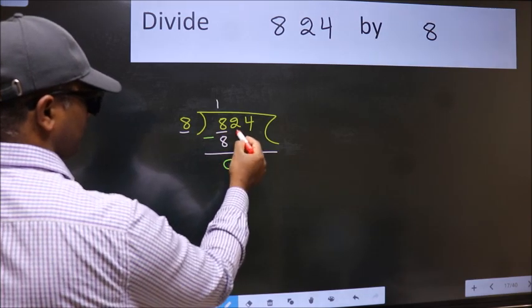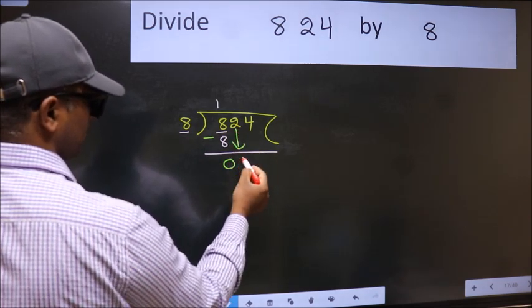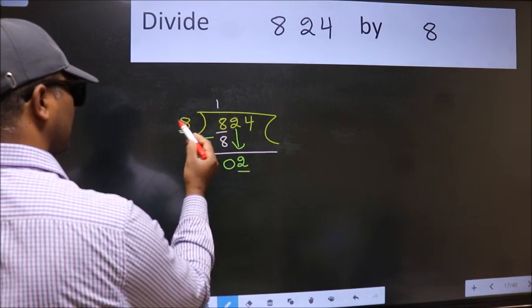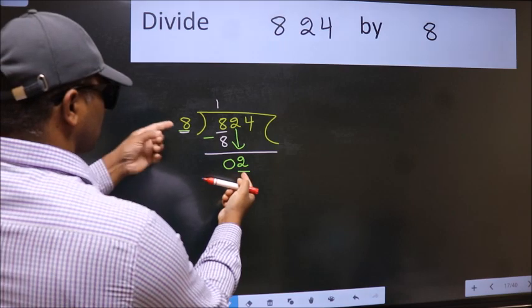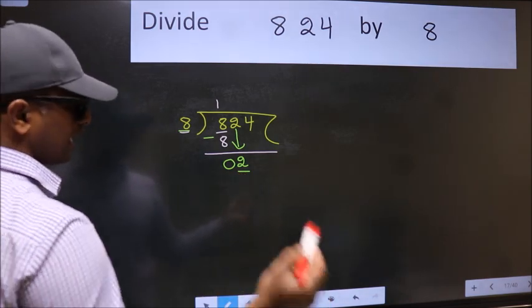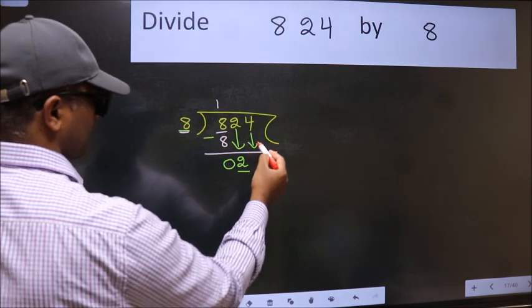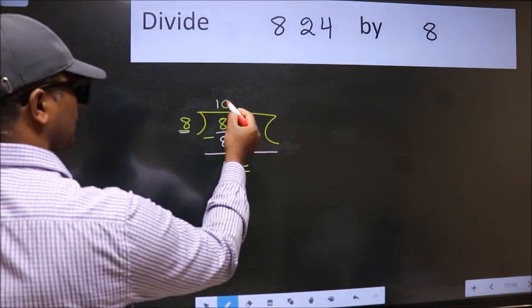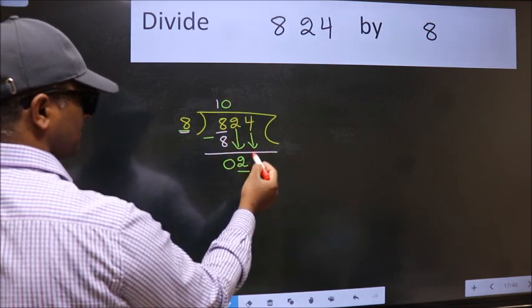After this, bring down the next number. So, 2 comes down. Now here we have 2 and here 8. 2 is smaller than 8, so we should bring down the second number. The rule for bringing down the second number is to put 0 here. Then we can bring this number down.